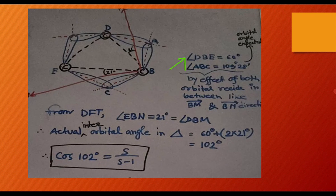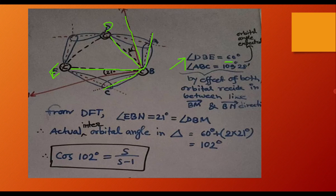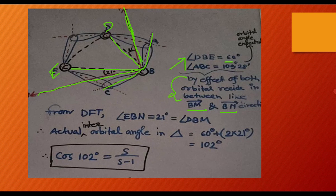Let's go to the calculation. Angle DBE (the internuclear angle) is 60°, and angle ABC (the original assumed orbital angle) is 109° 28'. By the effect of both factors, the orbitals reside in between along directions BM and BN. The total orbital angle is 60° + 21° + 21° = 102°.